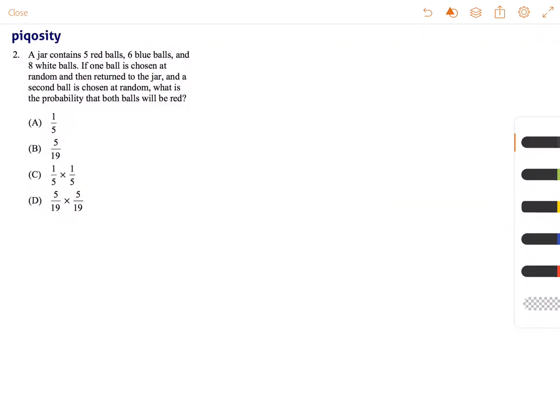This is Stephen and this question is testing your knowledge of probability. The question reads, a jar contains five red, six blue balls, and eight white balls.